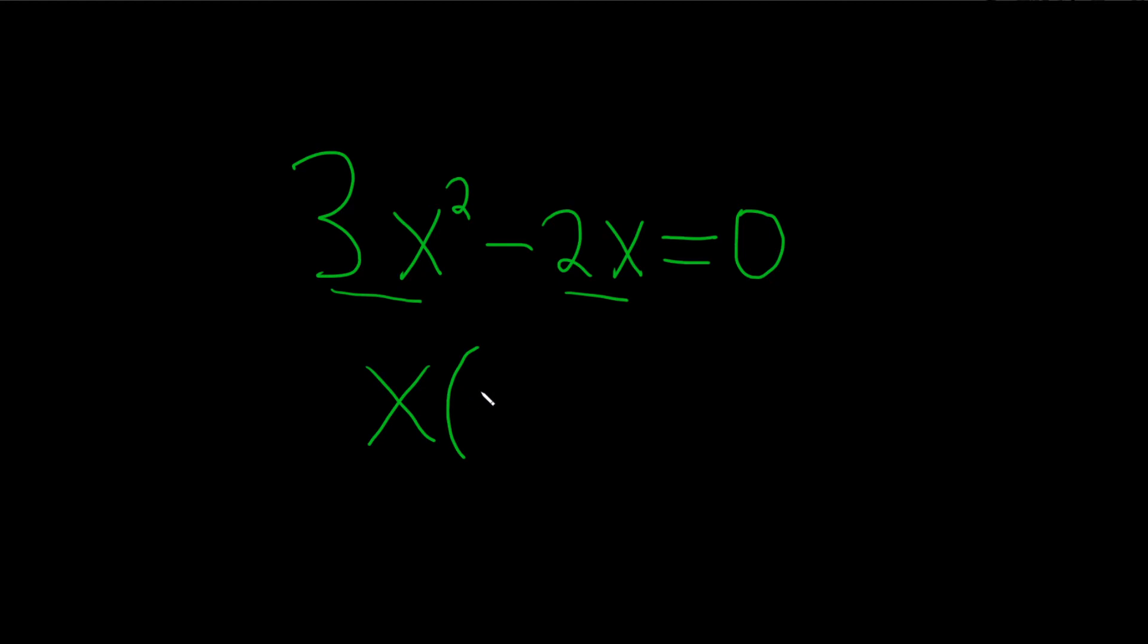When you're factoring out x, you just ask yourself, what do you multiply by x in order to get 3x squared? Just 3x.